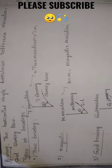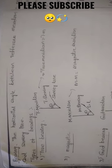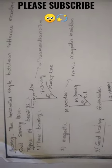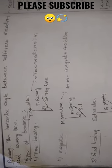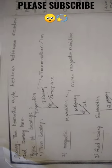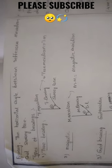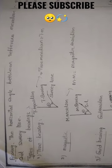We'll discuss what is bearing and types of bearings. Bearing is the horizontal angle between the reference meridian and survey line. Whatever line we are surveying, we call it the survey line. The horizontal angle between the reference meridian and the survey line is called the bearing.